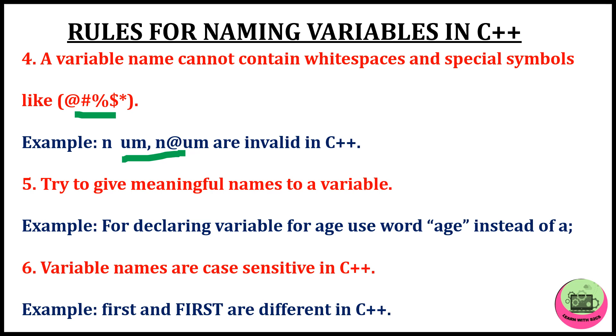Fifth one, try to give meaningful names to a variable. Why are we trying to give meaningful names? So that the user can easily understand what you are trying to tell. For example, for age, use age only instead of a.